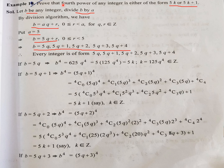Now we have to take the fourth power of these integers. First case: B equals 5q. Taking the fourth power on both sides, 5 raised to the power 4 is 625. Taking 5 common, we can write this as 5K where K is an integer. So B to the fourth power is written in the form 5k.